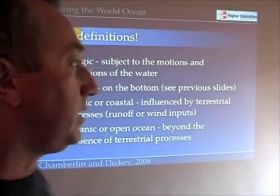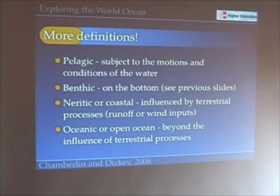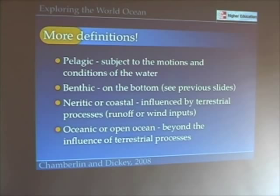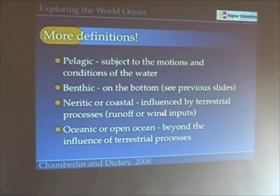We have to add some more definitions here. When we talk about the pelagic zone or pelagic waters — which could be anything from the very surface to the deepest depths, out of the influence of the seafloor — the pelagic zone is subject to the motions and conditions of the water column. The benthic zone is on the bottom. The neritic or coastal zone is influenced by terrestrial processes, and the oceanic or open ocean zone is beyond the influence of terrestrial processes.